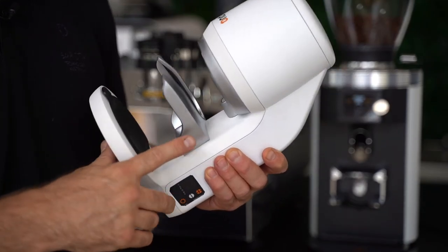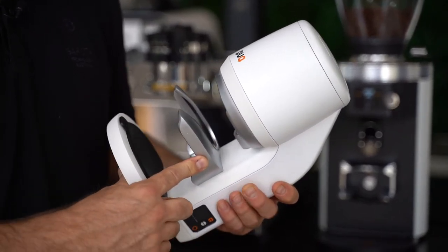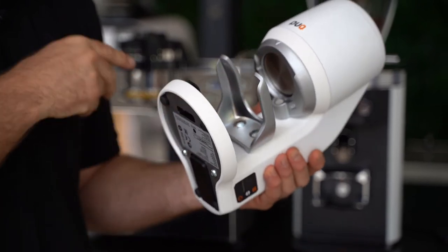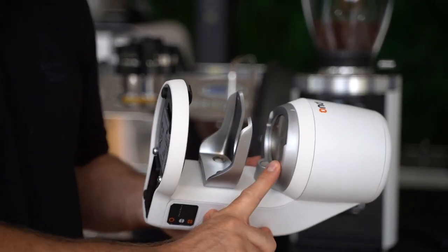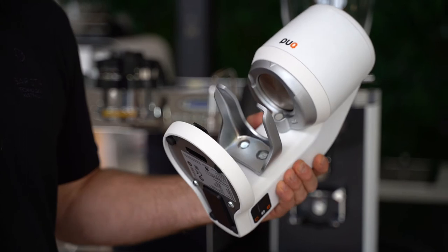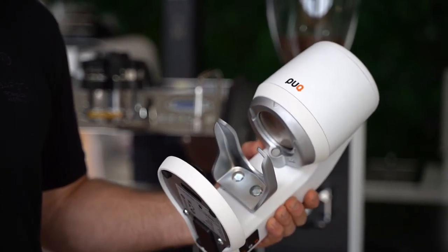The Puckpress Mini has an easily adjustable portafilter setup with simple fasteners and sensors in the upper clamp to help you get a perfectly level, secure fit on your portafilter.